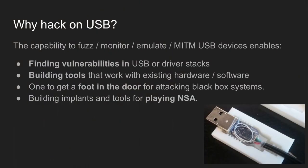USB is absolutely everywhere — I counted recently and there are more USB ports in my house than there are power outlets. My car has a USB port for firmware updates just sitting in the center console. It looks like a charging port, but you can plug a flash drive in and update the firmware on the car — with complete access to the CAN bus. A lot of embedded devices are running old 2.6 kernels with known vulnerabilities, but there's no incentive to upgrade because we're not attacking them.